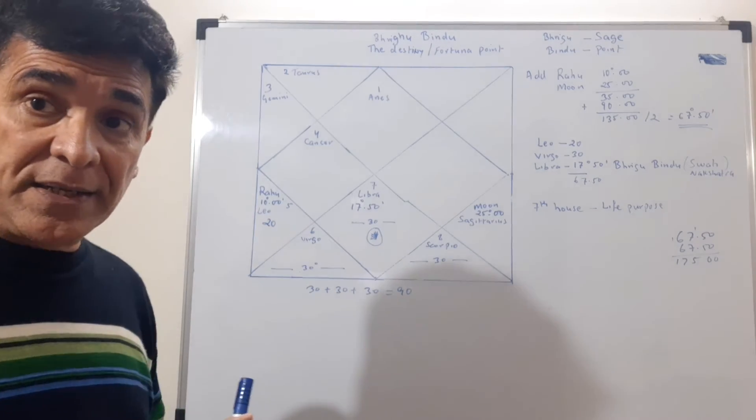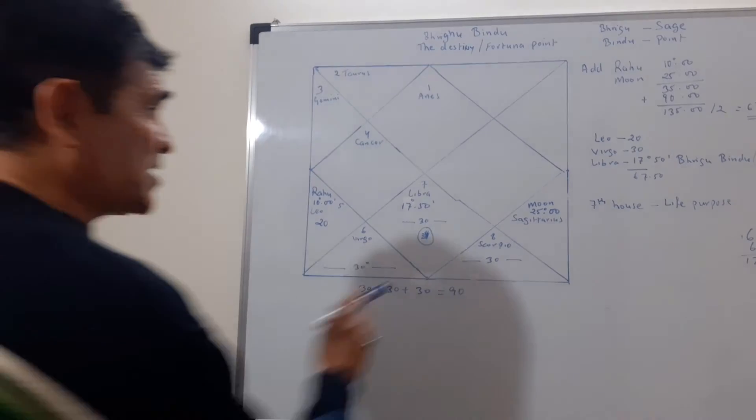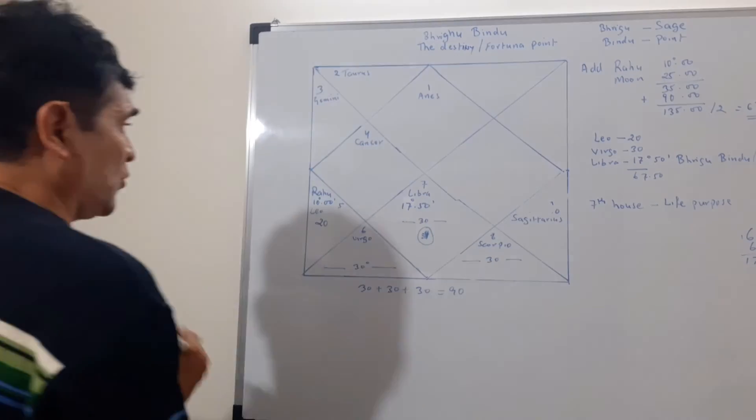Wait for my next video where I will explain what happens if your Bhrigu point falls into any of these areas. You may ask: what if Rahu and Moon are together? Even if they are together, there must be at least some gap between them. And one more important thing: it is never calculated from Moon to Rahu — it is always from Rahu to Moon. Let me bring that back on the board to illustrate.